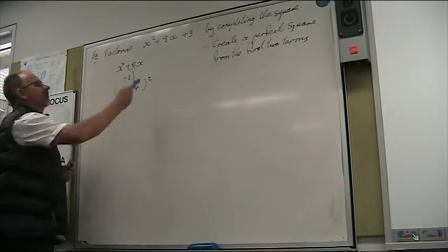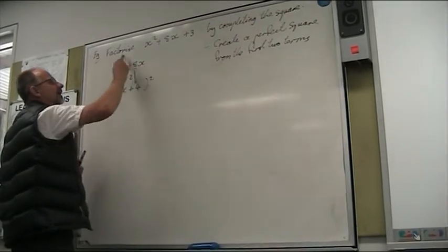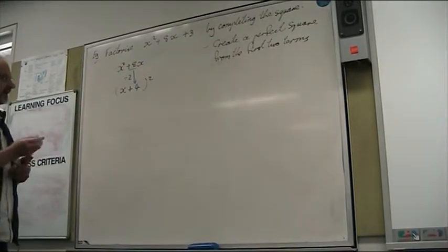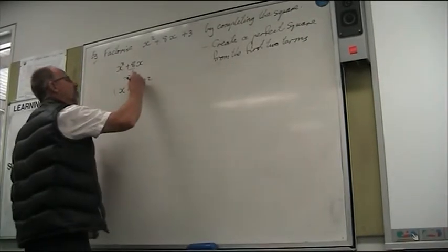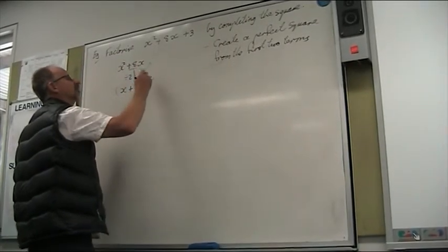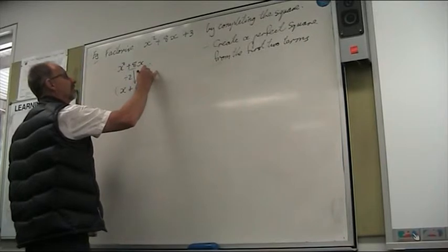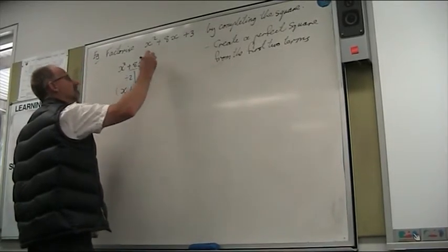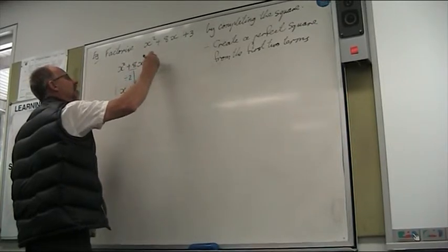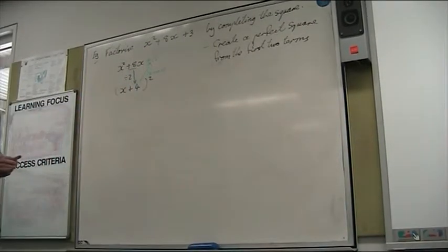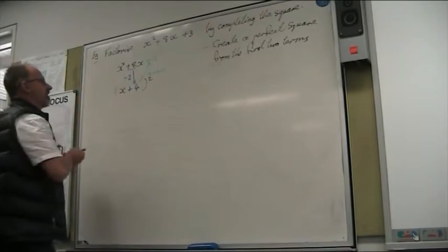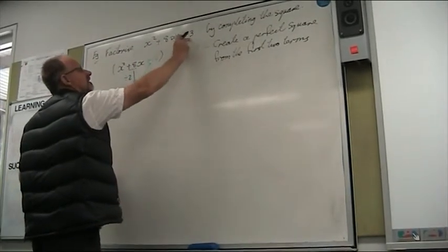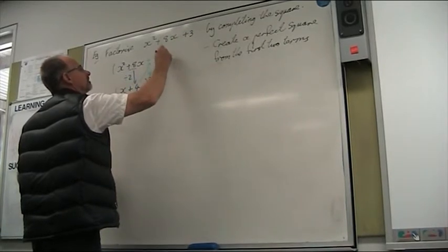Now for this to be a perfect square, we need to have a number on the end. To get that number, we look at this 4 and we square it — so that would be plus 16. I'll just put some brackets around that to highlight it. Now we had, in our original expression, plus 3, so I'd better put that out there.